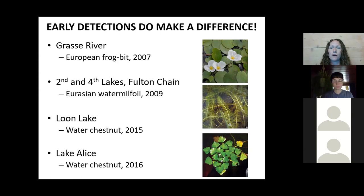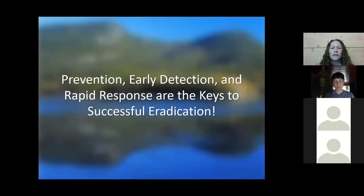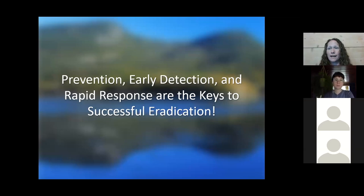We also have examples of water chestnut found when populations were small. In Loon Lake, it started at about 100 plants and we're down to about 40 found last year. In Lake Alice, about 10 or 12 plants were found the first year, and the last couple of years follow-up surveys have found none. These examples highlight that when some invasives do get through, finding them early allows a rapid response to remove them before they become established.